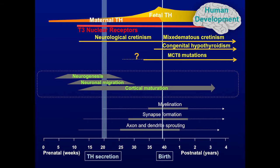But we have the opportunity to examine the brain of patients with MCT8 mutations, and this has a double interest. Because if we assume that MCT8 mutations are due to lack of thyroid hormone in the brain, then we may have a glimpse of how deficiency of thyroid hormone in the human brain alters the structure of the brain.